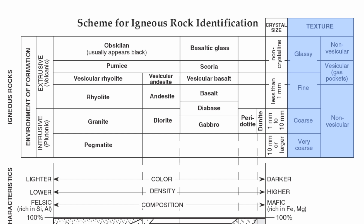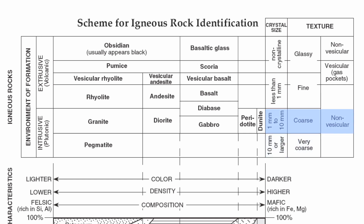Glassy, fine, coarse, and very coarse. You also have gas pockets with some of these rocks, which we call vesicular. Next to that is going to be your actual crystal size. The crystal sizes are going to correspond with the actual description of texture. So your very coarse rocks, which can be non-vesicular, are going to be 10 millimeters or larger. Your coarse rocks, non-vesicular, are 1 to 10 millimeters. Your fine rocks, which are less than a millimeter, can be non-vesicular or vesicular. And your glassy rocks, which are non-crystalline — almost instant cooling of the lava — are going to be either non-vesicular or vesicular.